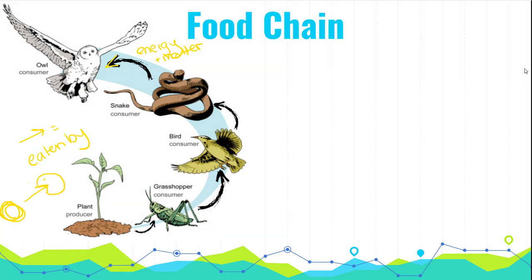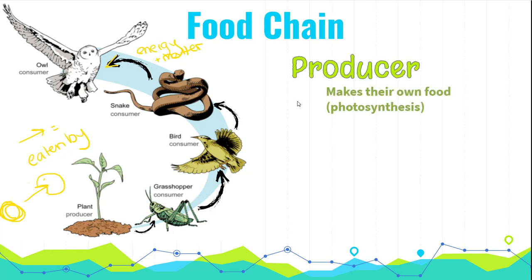When we look at a food chain, we've got different levels. We have producers. Producers are the ones that make their own food. Remember that we make our own food through photosynthesis. These are going to be organisms that are most likely plants.